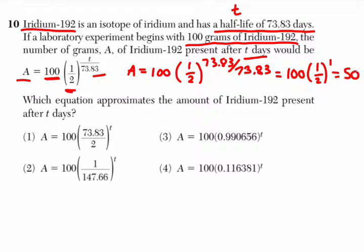So if you plug in 73.83 here, you can see that it does leave you with half of what you started with. The formula makes sense. And they're saying, which equation approximates the amount of Iridium-192 present after T days? They're asking you which one of these equations here is actually the same. Now, a common type of question in the Regents is like this, where you have to manipulate the exponents. What do I mean?